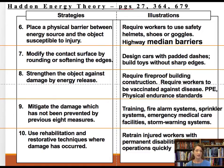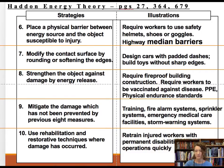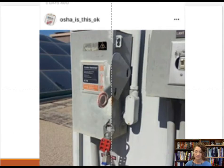Rules nine and ten cover the event and post-event phases. During the event, you mitigate the damage through training so people know what to do. Fire alarm systems and sprinkler systems also help lessen the impact while an event is occurring. The last rule is to rehabilitate both the people and the facility and get everything back on board as quickly as possible.